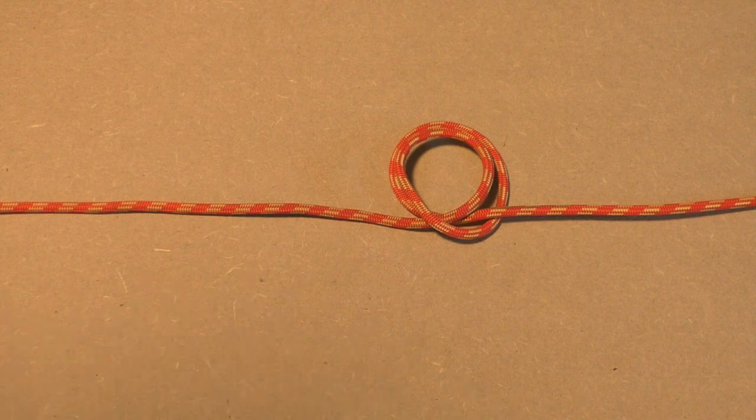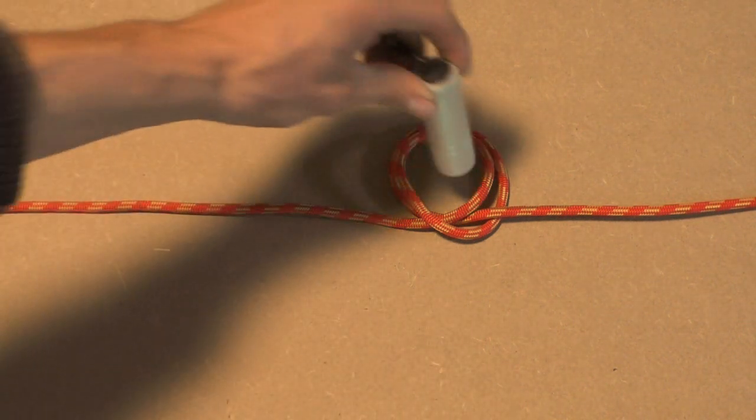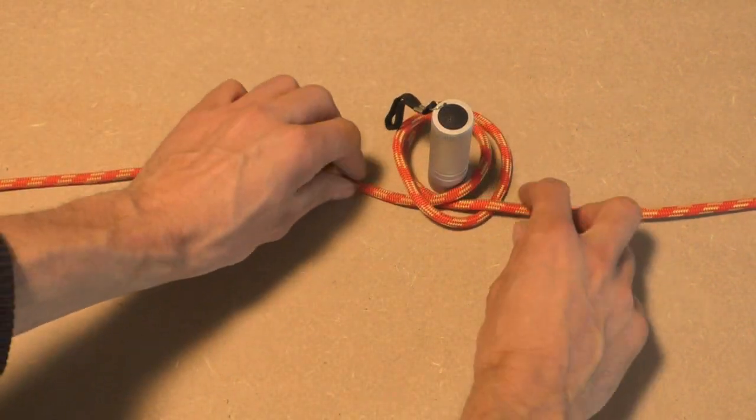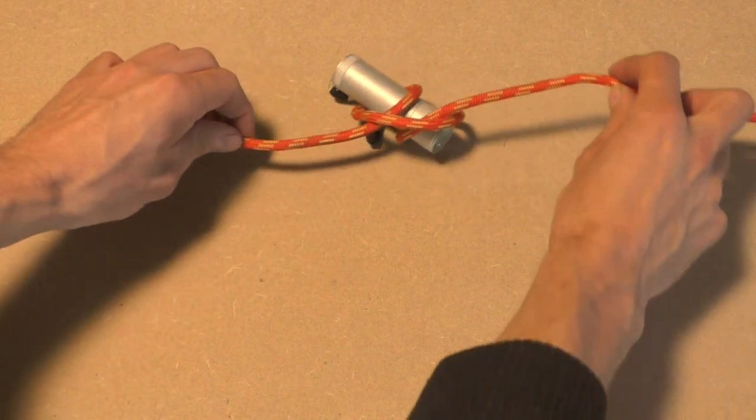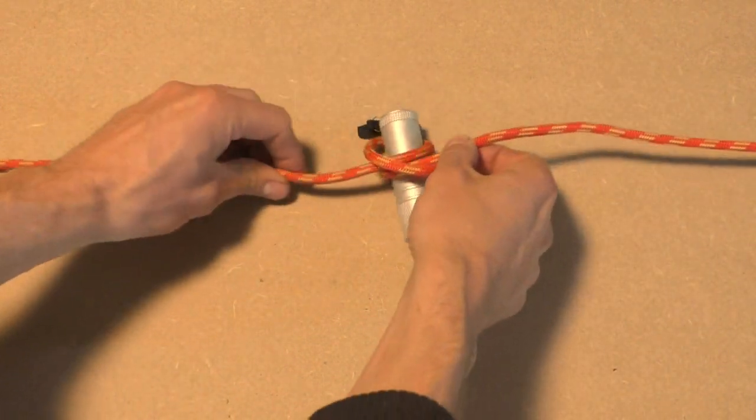This forms your basic clove hitch. Now you can stick an object in the middle of the two loops or put it around a post. Set and dress the knot.